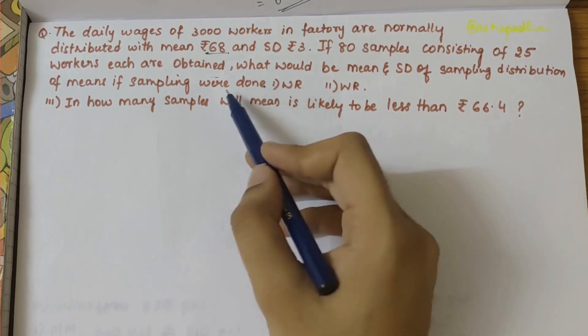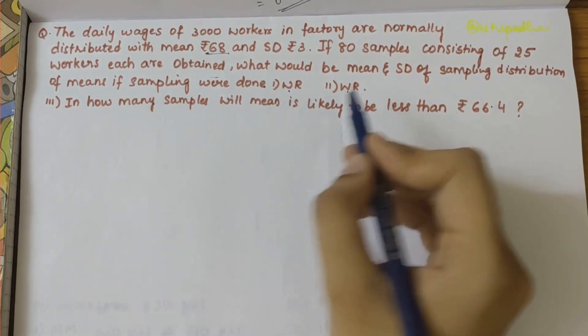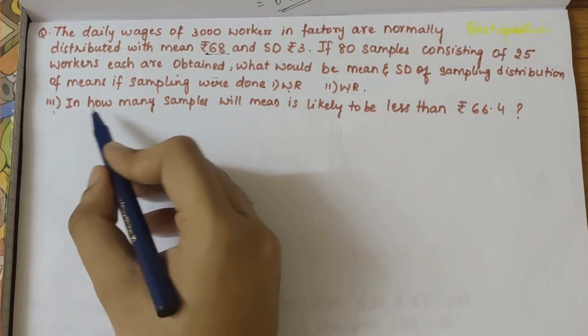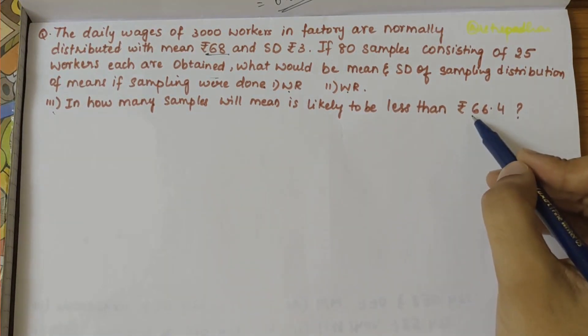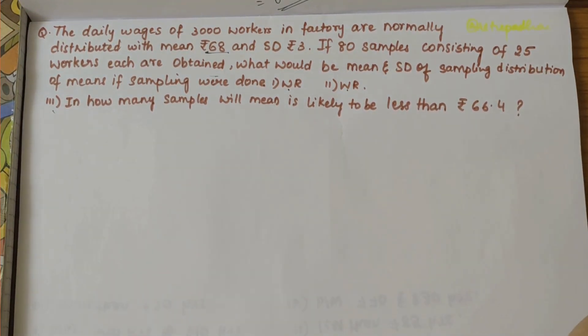And the third part is: in how many samples will mean is likely to be less than 66.4 rupees? This question is pretty simple and straightforward. First let's write down the given things.